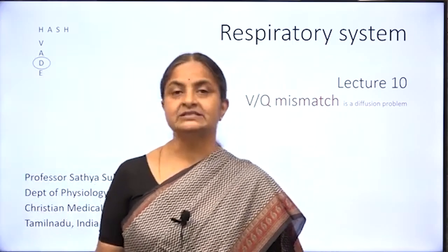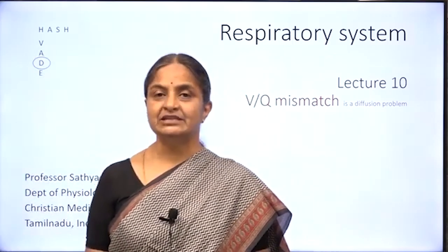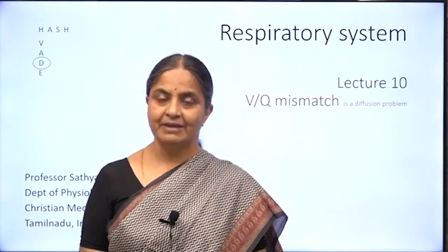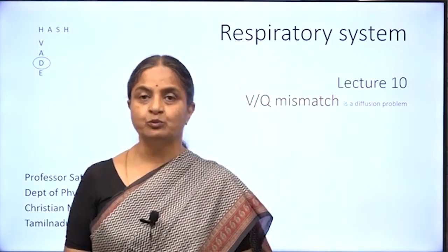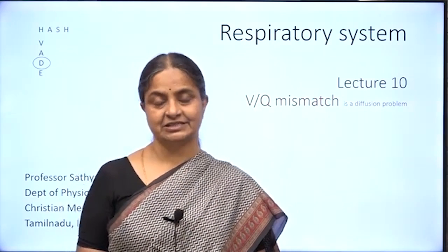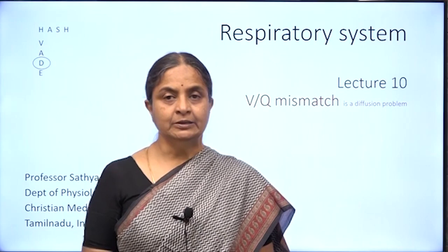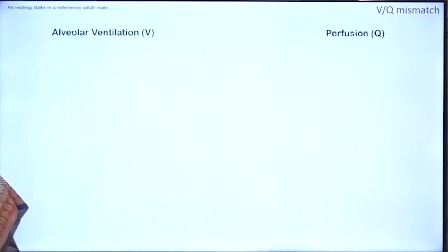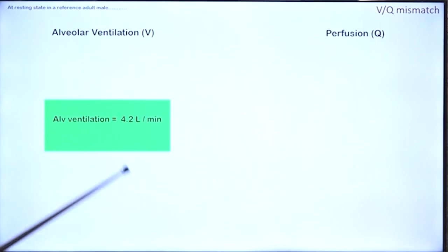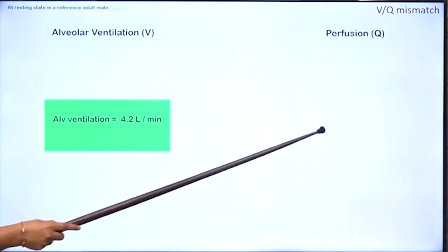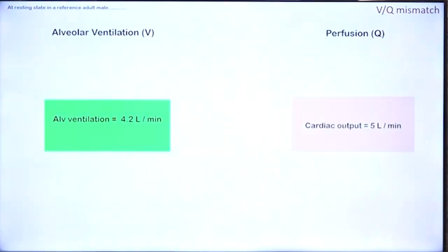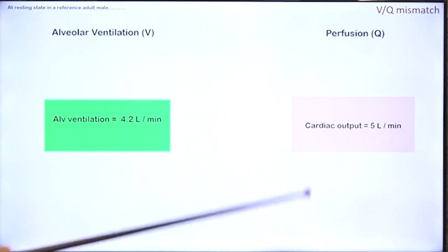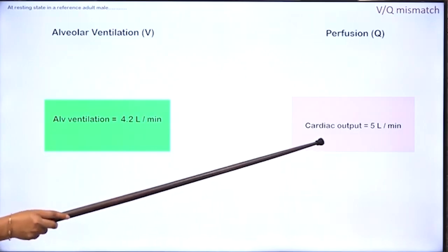We shall now discuss what is meant by ventilation perfusion matching and what VQ mismatch is. We have seen earlier that alveolar ventilation is 4.2 liters per minute and perfusion or cardiac output is 5 liters per minute — the amount of blood that goes into the lungs every minute.